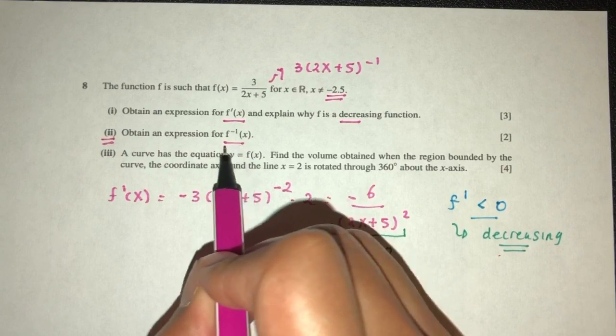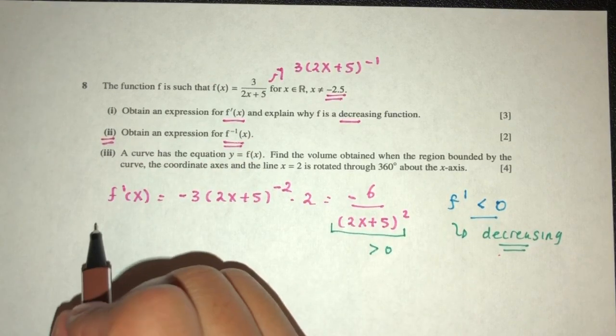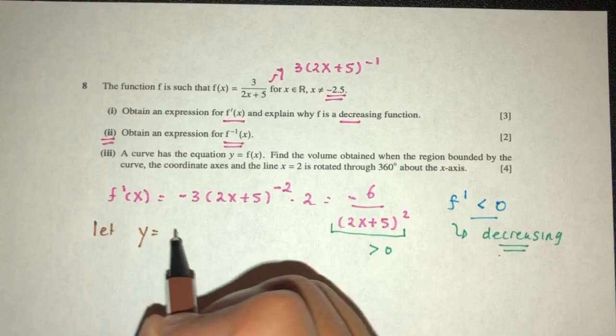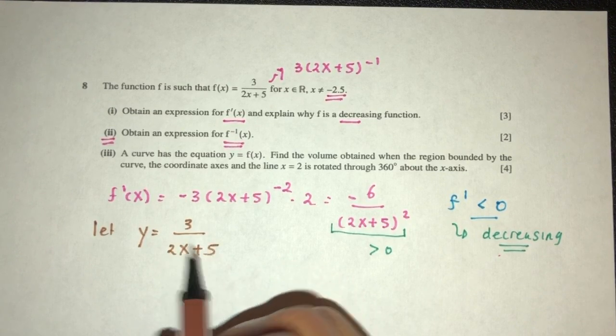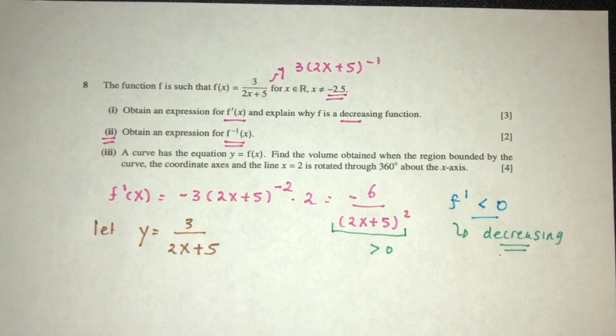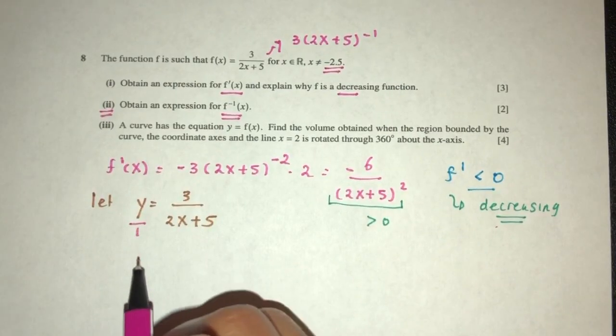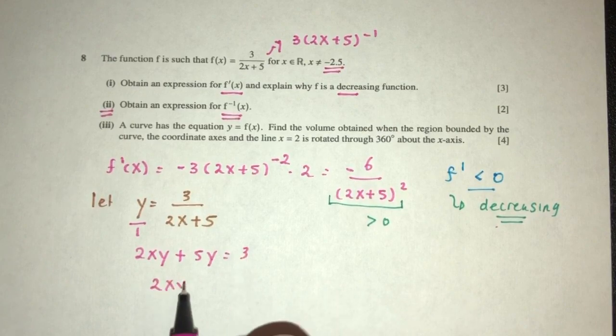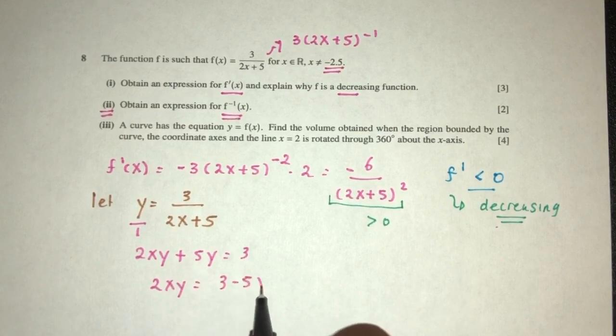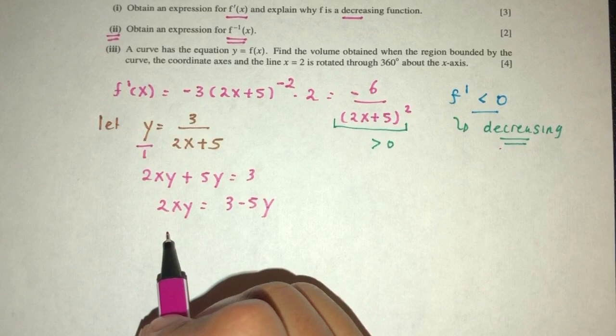Now part two, we have to find this. Pretty easy. Let y equal to f of x, that is 3 over 2x plus 5. Next, we have to make x become subject, so cross multiply. You will have 2xy plus 5y have to be 3. 2xy have to be 3 minus 5y.